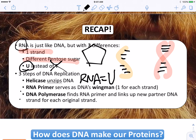Three steps to DNA replication. First, helicase unzips the DNA — that's step one. Step two is that RNA primer serves as DNA's wingman and keeps it company while it's waiting for a new partner. Then DNA polymerase finds the RNA primer and links up to it, making a new partner strand for the DNA.